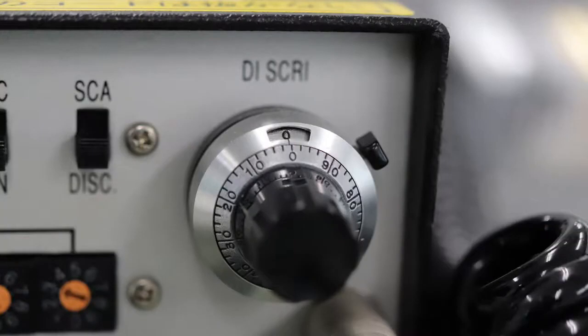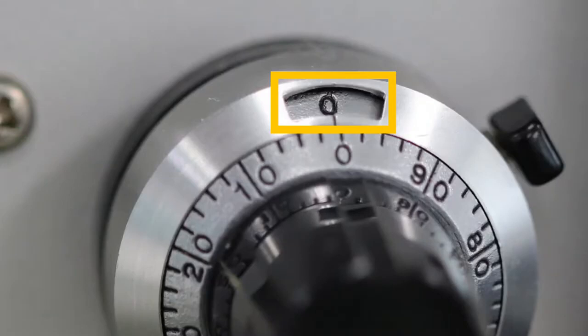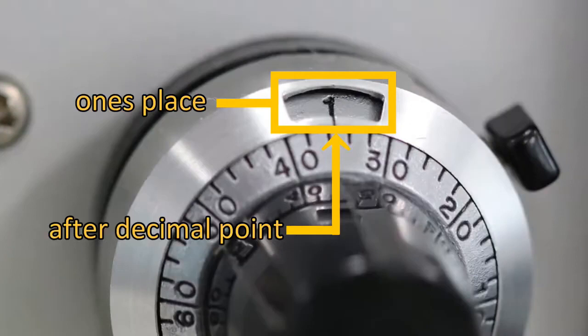The threshold value is set by this dial, which is labeled DISC. Such a dial is called a helipot. Let me explain how to use it. When the dial is turned once, the number in the square window goes up by one. The number in the square window is 1's place, and the scale of the dial represents the value after decimal point. Since the number in the square window is 1 and the dial is 35, the value at this time is 1.35.